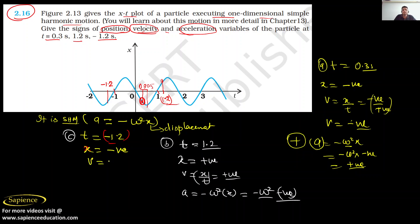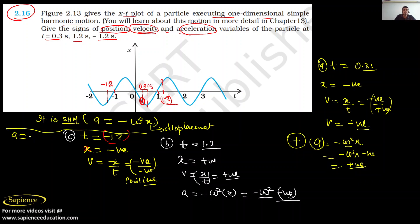Velocity is x over t — displacement is negative and time is also negative, so velocity is positive. For acceleration: a = -ω²x. X is negative, so minus omega squared times negative gives a positive result, since omega squared is always positive. Therefore, in case C, acceleration is positive.